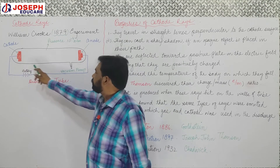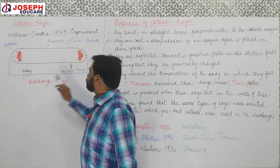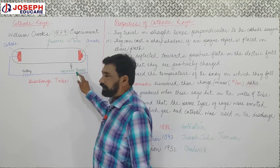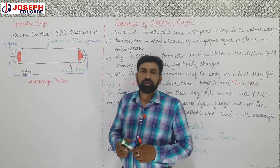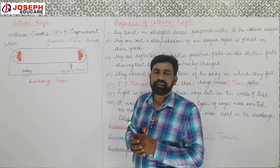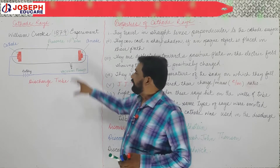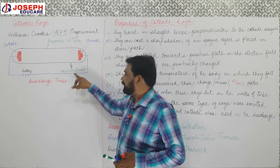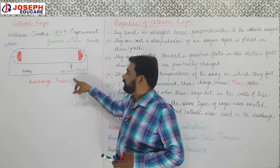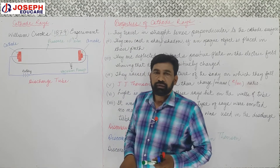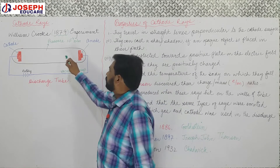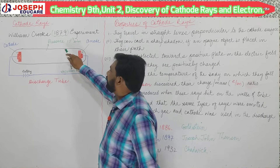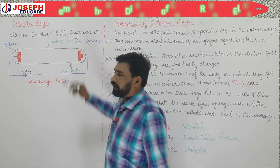It is a glass tube. A vacuum pump is attached to this glass tube. This vacuum pump is responsible for evacuating air from the discharge tube. The air present inside the discharge tube was removed using a vacuum pump, and with its help the pressure inside the discharge tube was reduced up to 10 to the power of negative 4 ATM.